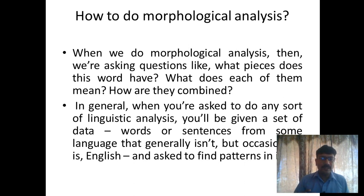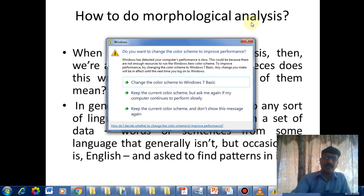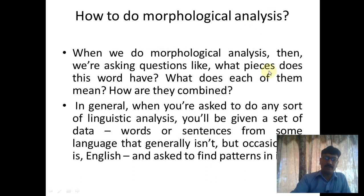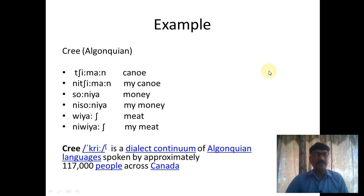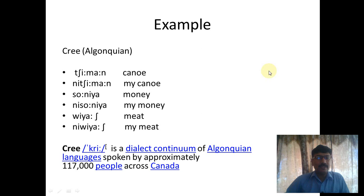The data is a set of words from some language that generally isn't, but occasionally is, English, and you are asked to find patterns in it. Whenever there is a question to do morphological analysis, you are often given data from a language other than English so that you can develop a better understanding of morphological analysis. An example given here is Cree — a dialect continuum of Algonquian languages spoken by approximately 170,000 people across Canada.